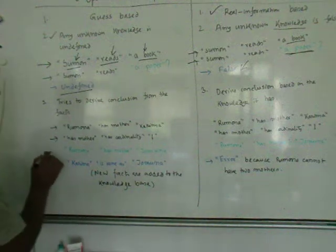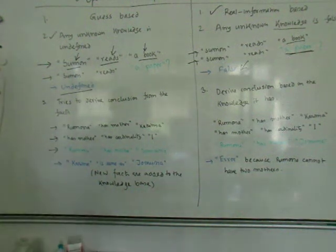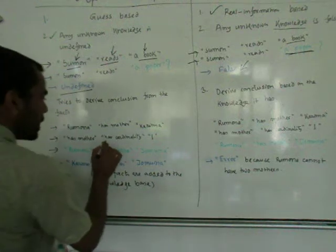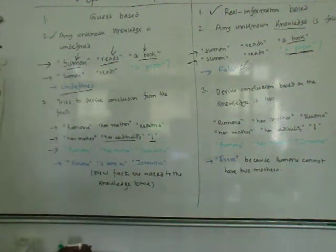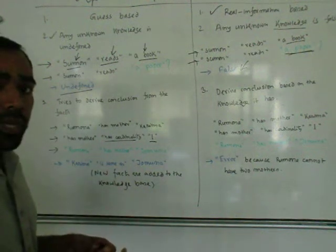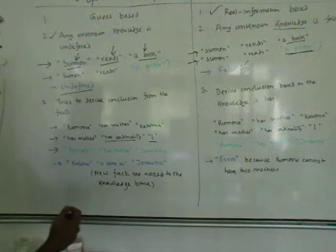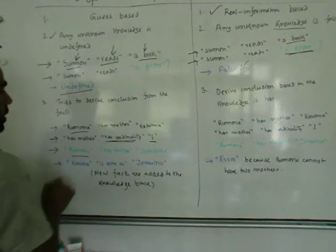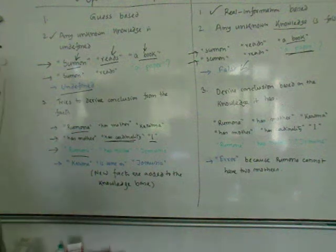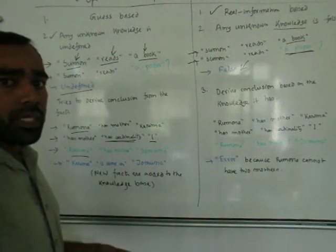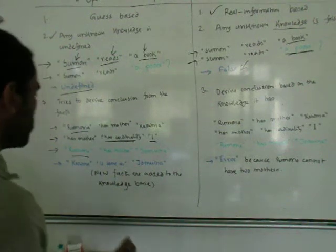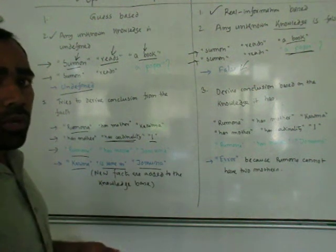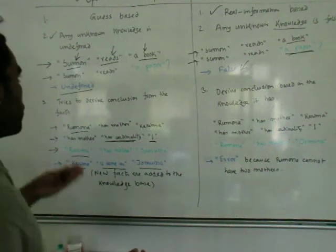There is another statement: 'has mother has cardinality one,' meaning Rumona can have only one mother. Now if a query comes saying 'Rumona has mother Jamona,' since the cardinality is defined as one, open world reasoning drives the conclusion that Rumona can only have one mother — so Korima and Jamona must be the same person. It tells us Korima is the same as Jamona; they may just have different names.